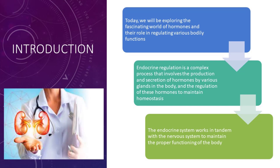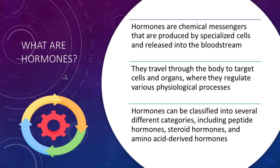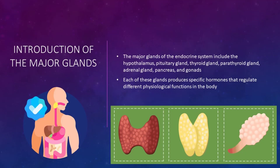What are hormones? Hormones are chemical messengers that are produced by specialized cells and released into the bloodstream. They travel through the body to target cells and organs where they regulate various physiological processes. Hormones can be classified into several different categories including peptide hormones, steroid hormones, and amino acid derived hormones.